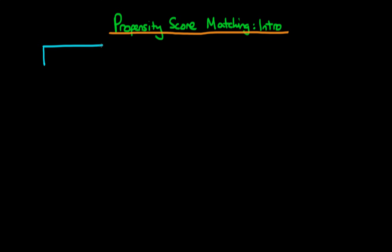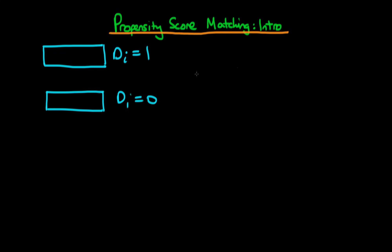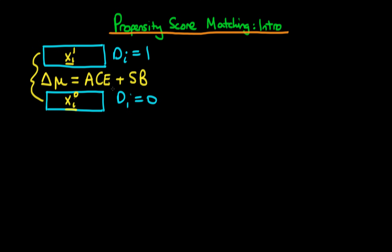Typically what we're doing when we're talking about propensity score matching is we have an issue whereby our sample who are treated — those who choose di equal to 1 — and our sample who choose not to be treated, these two samples typically differ in terms of other factors beyond the treatment itself. There may be a whole list of different covariates which differ between these two samples. Hence if we just compare a difference in means between these two groups, this is going to reflect both the average causal effect and some degree of selection bias, because there are actual differences between the groups in terms of other important covariates for determining the outcome variable.